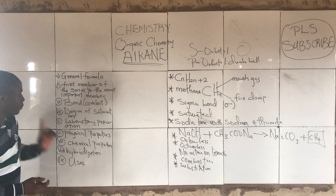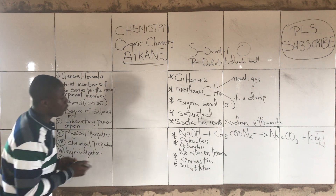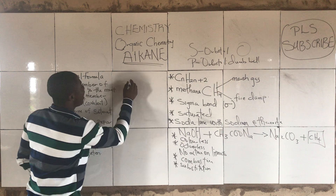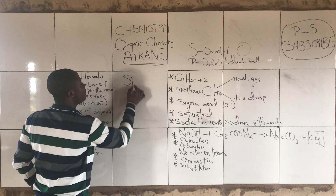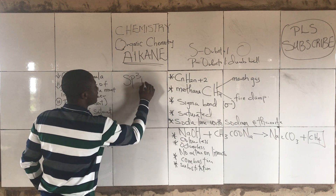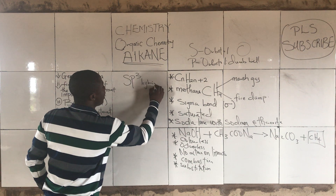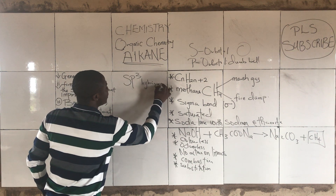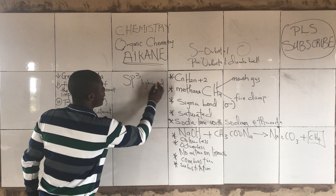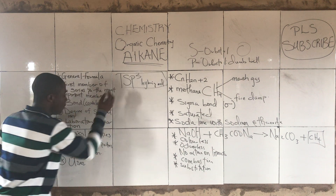What is the hybridization for alkanes? Alkanes are all SP³ hybridized.